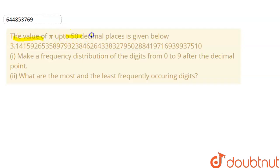The value of pi up to 50 decimal places is given below. We need to find: first part is make the frequency distribution of the following digits from 0 to 9 after decimal point, and what are the most and the least frequent digits occurring.